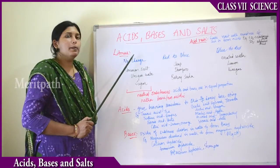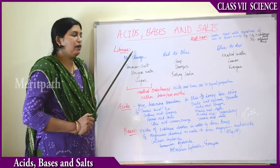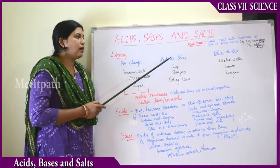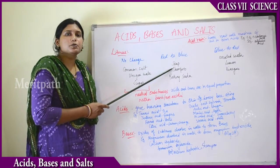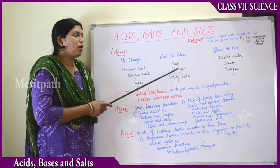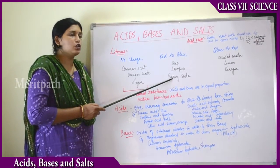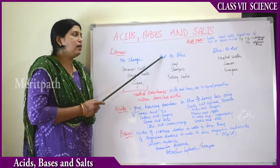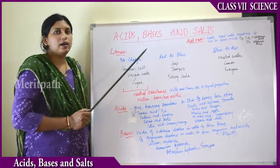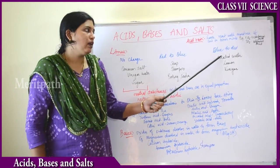Litmus is a very commonly used indicator. Let's see how litmus reacts to a few substances. When we add litmus paper to soap solution, shampoo solution, or baking soda — all these are basic solutions — they turn red litmus paper into blue color.